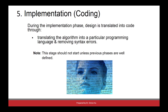Implementation, also called coding, is a relatively small phase in the software development lifecycle. During this phase, we try to translate our design or algorithm into code using a certain programming language. We should move to the implementation phase only once we have complete, correct design documentation. Nowadays, there are very nice software tools that can help us translate the design into code automatically.